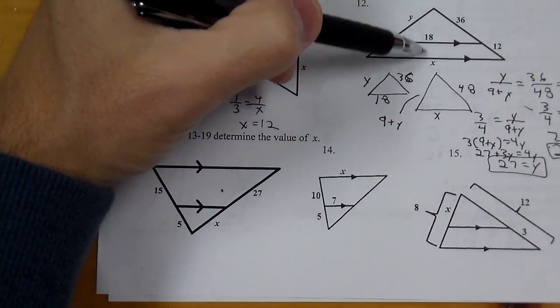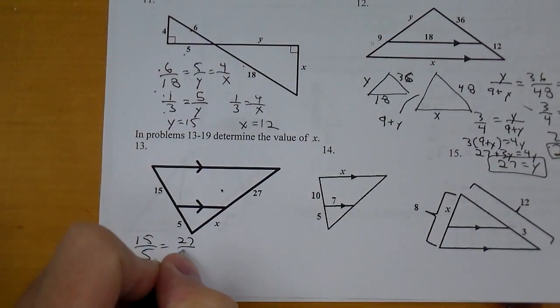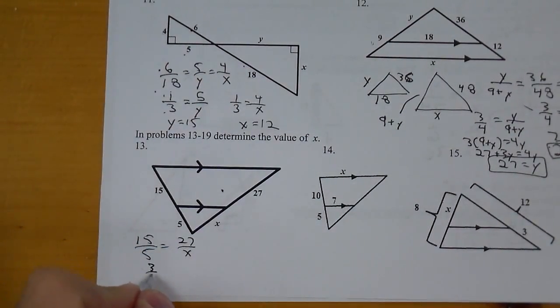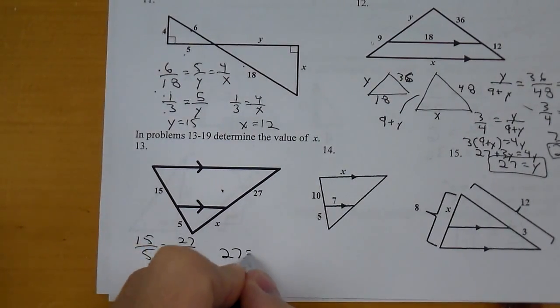Now, 13, though, is the side splitter. It doesn't use these sides like this previous one did. So this one, we could actually go 15 over 5 equals 27 over X. 15 over 5 is 3 over 1. So then we get 27 equals 3X by cross product, and X is 9.